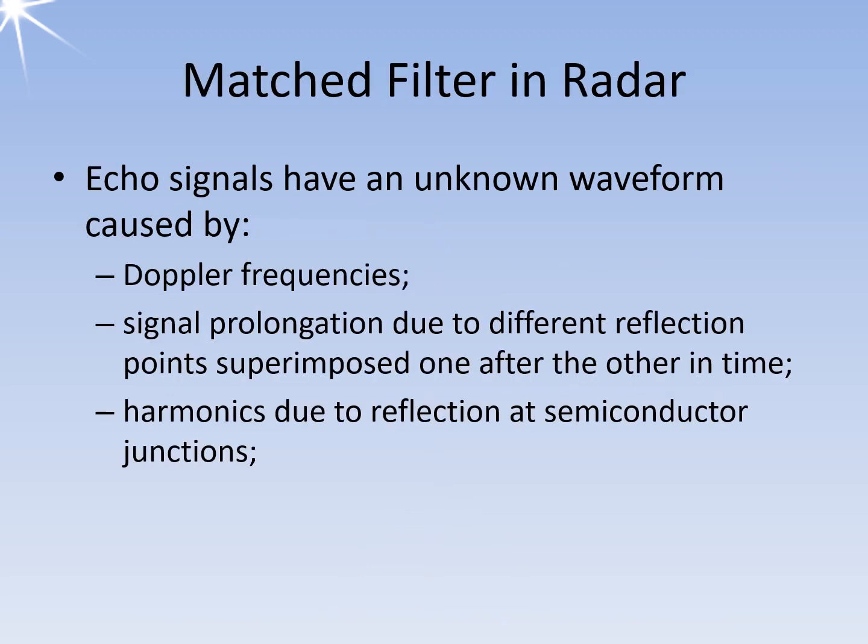One should assume that the echo signal in a radar set has at least approximately the same form as the transmitted signal. But only approximately. These slight changes in the signal form are essential to distinguish the echo signals from desired and undesired reflectors.